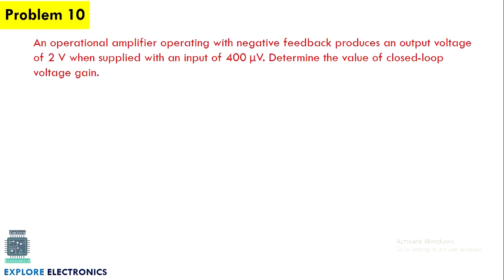The next problem is on an operational amplifier. An op-amp operating with negative feedback produces an output voltage of 2 volts when supplied with an input of 400 microvolts. Determine the value of the closed loop voltage gain.